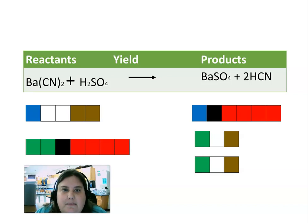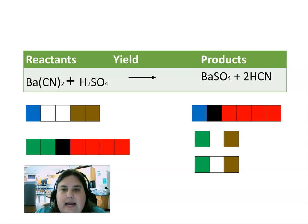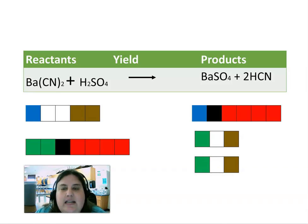Again, the law of conservation of mass states that matter cannot be created or destroyed — it can only be rearranged. We're going to take this information over the next few days and look at balanced versus unbalanced equations. If an equation is balanced, it has to follow the law of conservation of mass, meaning it has to have the same number of atoms for each element on both sides. If it does not have the same number of atoms for each element on both sides, it is considered an unbalanced equation and does not follow the law of conservation of mass.